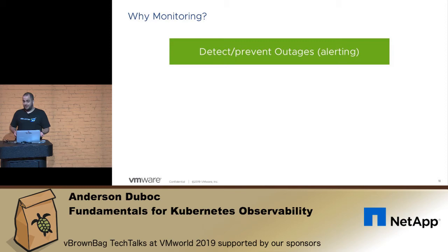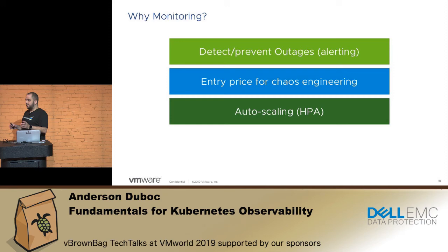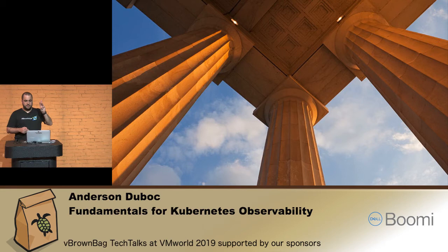But why monitoring? The tech can prevent outage — everybody knows that. It's the entry price for chaos engineering. If I want to do chaos engineering, I need to be well aware of that. And then there's outscaling — now we're talking Kubernetes. How do I do HPA, horizontal pod autoscaling? How do I do pod autoscaling using external metrics in Kubernetes and optimize costs and performance?